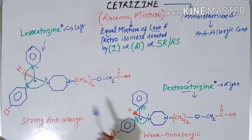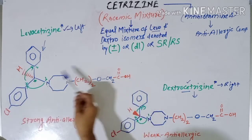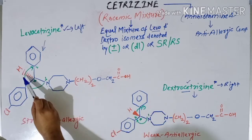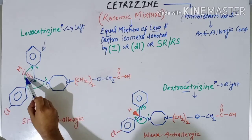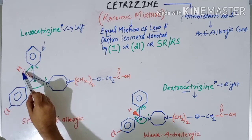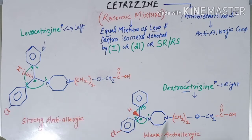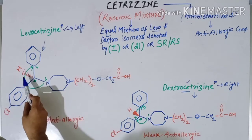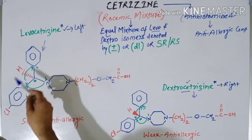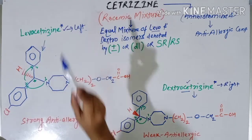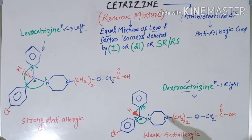In levocetirizine and dextrocetirizine, the difference is only in the position of one hydrogen atom — all other parts of the molecules are identical, which is why they are isomers. In levocetirizine, the hydrogen is placed below the plane, represented by a dash notation. In dextrocetirizine, the hydrogen is placed above the plane, represented by a wedge line. Due to the hydrogen being below the plane, the levo molecule rotates polarized light to the left, and with hydrogen above the plane, the dextro molecule rotates it to the right.